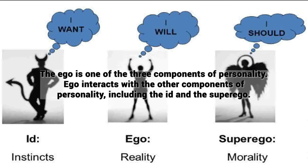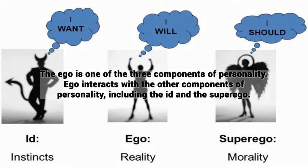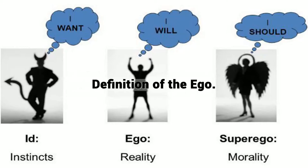The ego is one of the three components of personality. Ego interacts with the other components of personality, including the id and the superego.